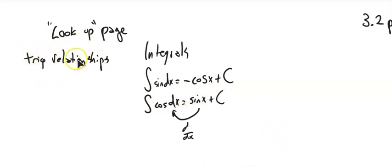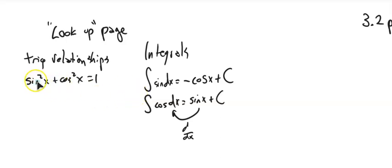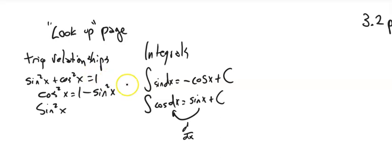Another thing to remind you about trig is the Pythagorean relationship: sine squared plus cosine squared equals one. Subtracting sine squared gives cosine squared equals one minus sine squared. Subtracting cosine squared gives sine squared equals one minus cosine squared. These are relationships we'll use to help with trig integration.